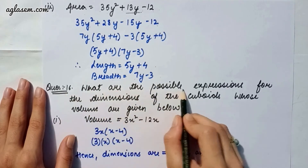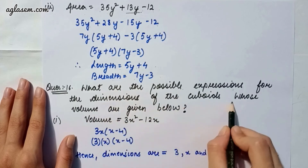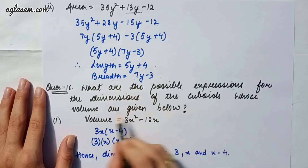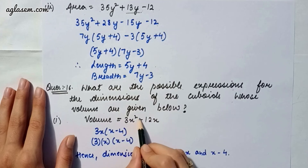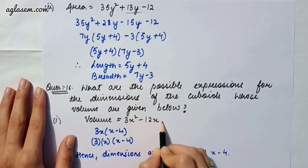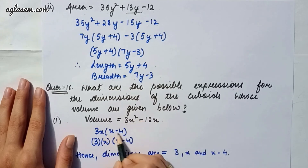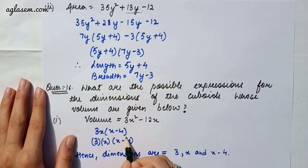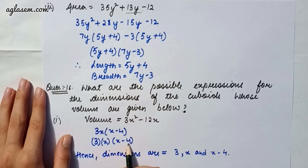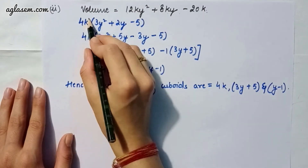Question 16: Find possible expressions for the dimensions of cuboids whose volumes are given. Part one: volume = 3x² - 12x. We factor as 3x(x - 4), which can also be written as 3 × x × (x - 4). So the dimensions are 3, x, and (x - 4).